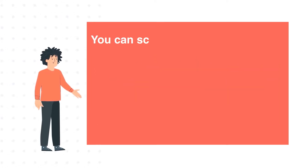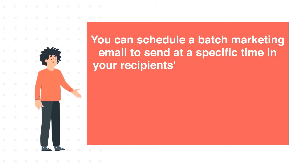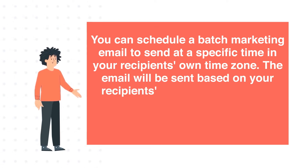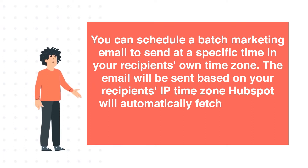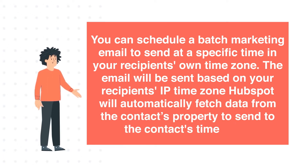You can schedule a batch marketing email to send at a specific time in your recipient's own time zone. The email will be sent based on your recipient's IP time zone. HubSpot will automatically fetch data from the contact's property to send to the contact's time zone.